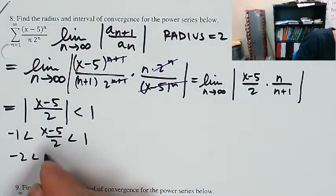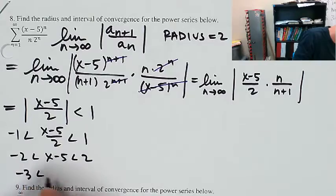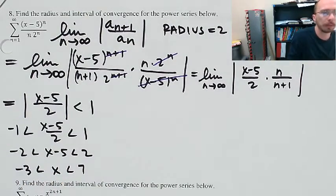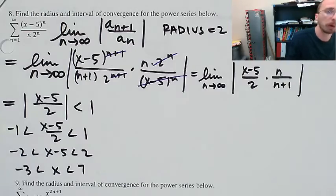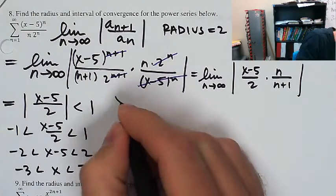I know I need that limit to be less than 1 for the series to converge absolutely, which gives me the interior of my interval of convergence. So negative 1 is less than (x minus 5)/2, which is less than 1. I also know that the radius is going to be equal to 2. So negative 2 < x minus 5 < 2, add 5 to everything — it's negative 3 to 7. Now I need to test negative 3 and 7 to determine if those are places where the power series converges.